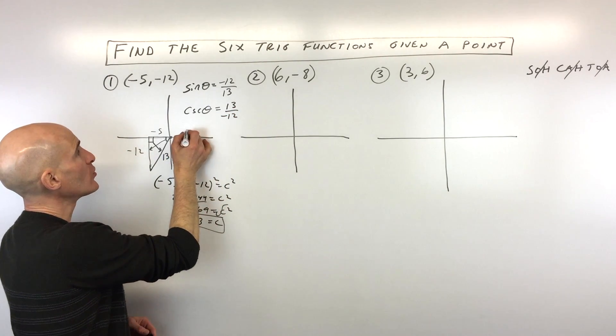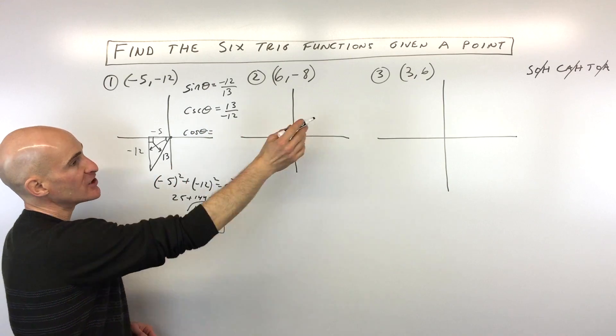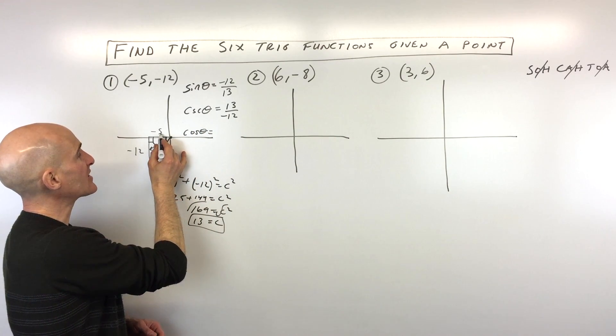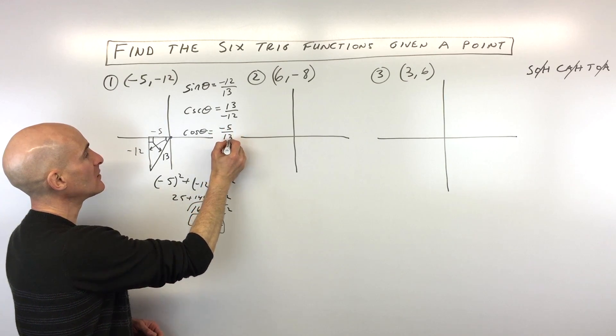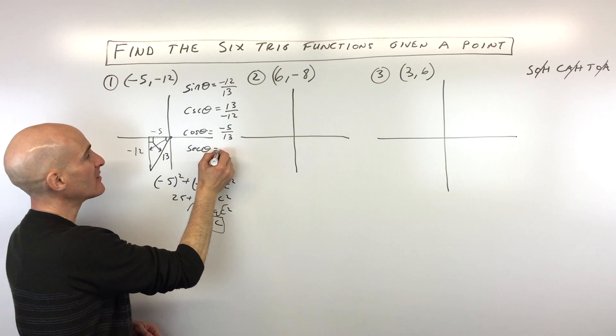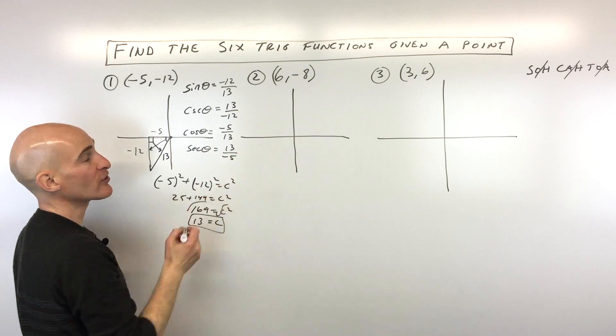Let's go to the cosine now. So the cosine of theta is adjacent over hypotenuse. So adjacent is next to over the hypotenuse. So this is negative 5 over 13. And if you want to find the secant of theta, you just take the reciprocal, that's 13 over negative 5.